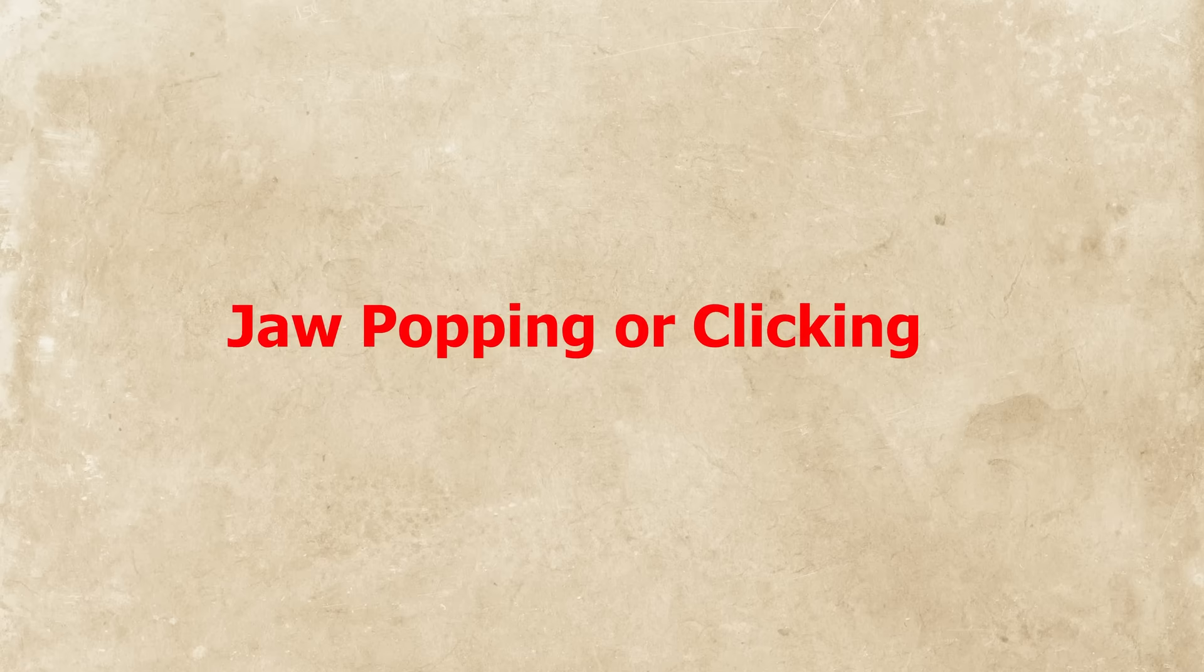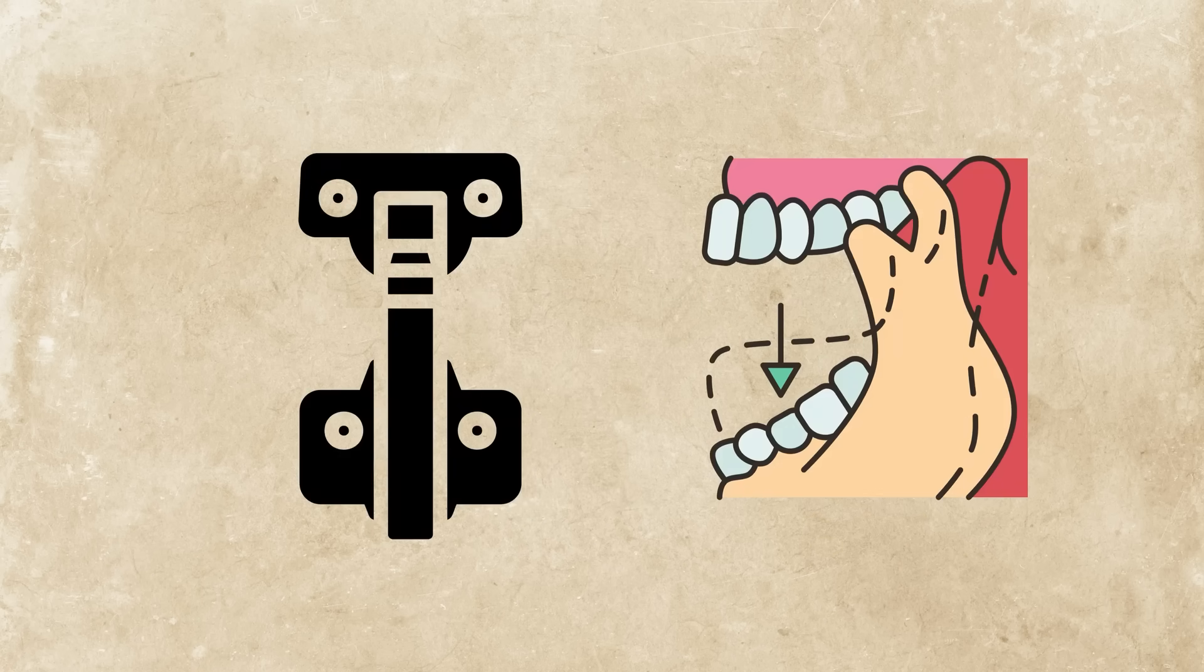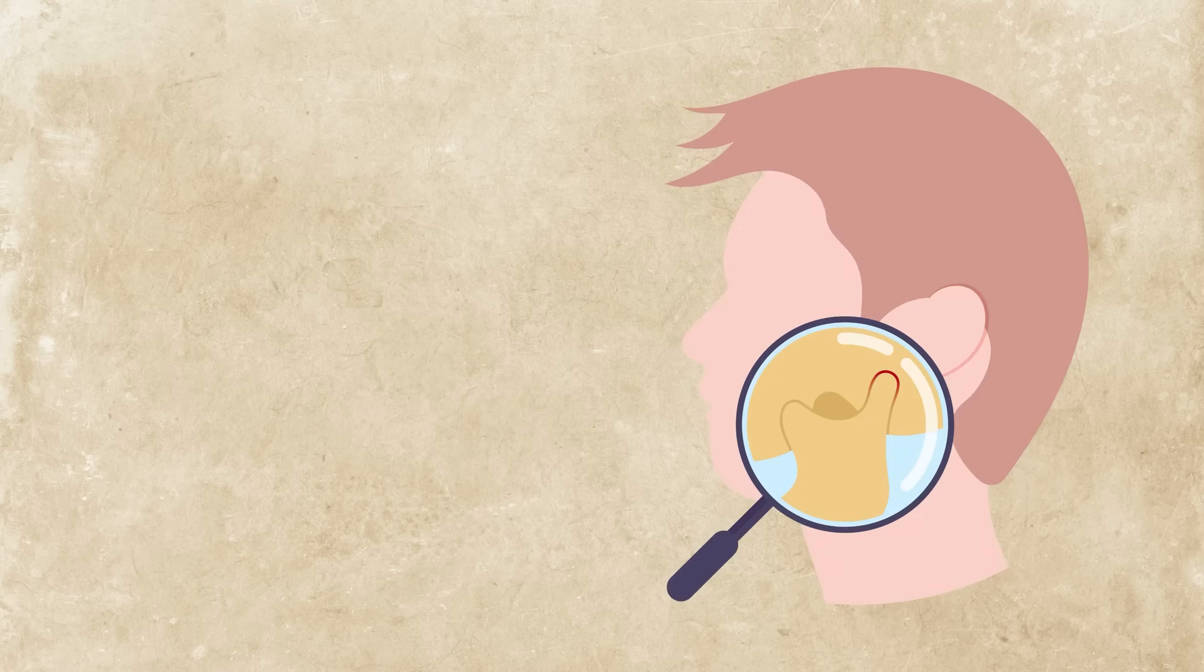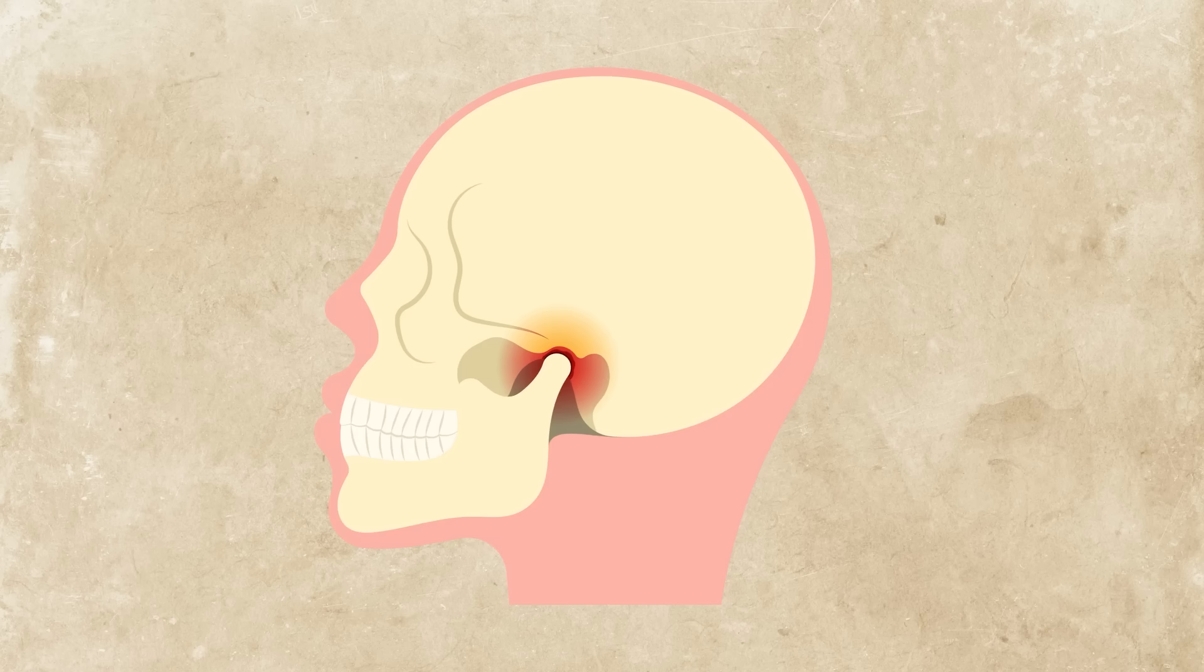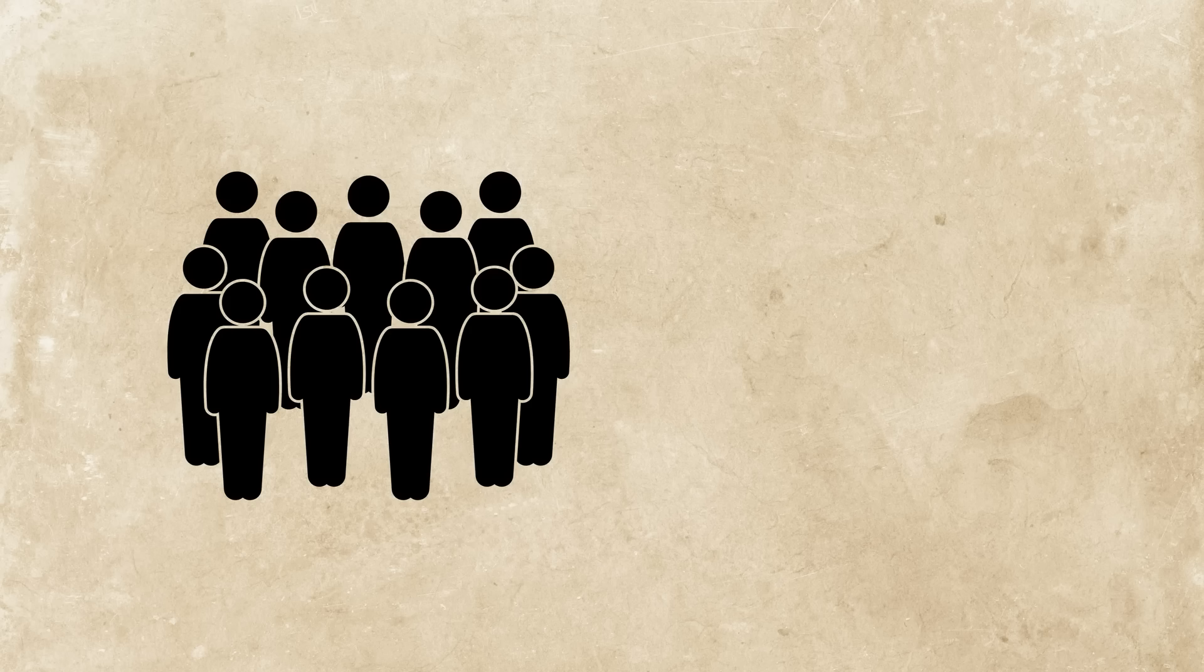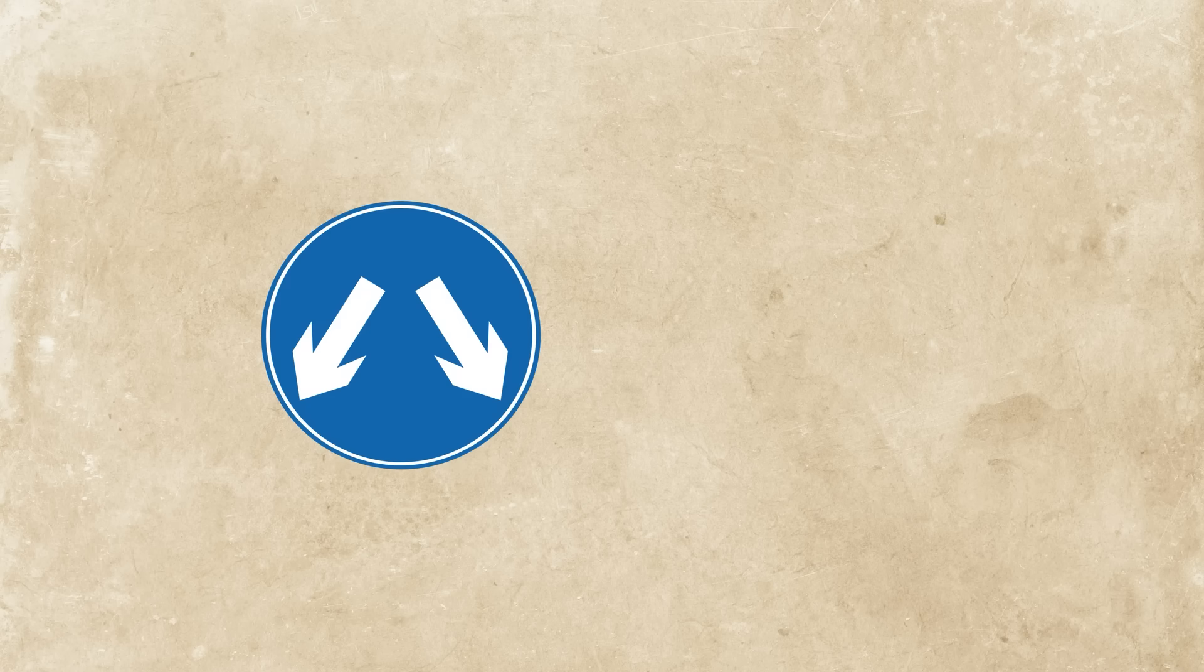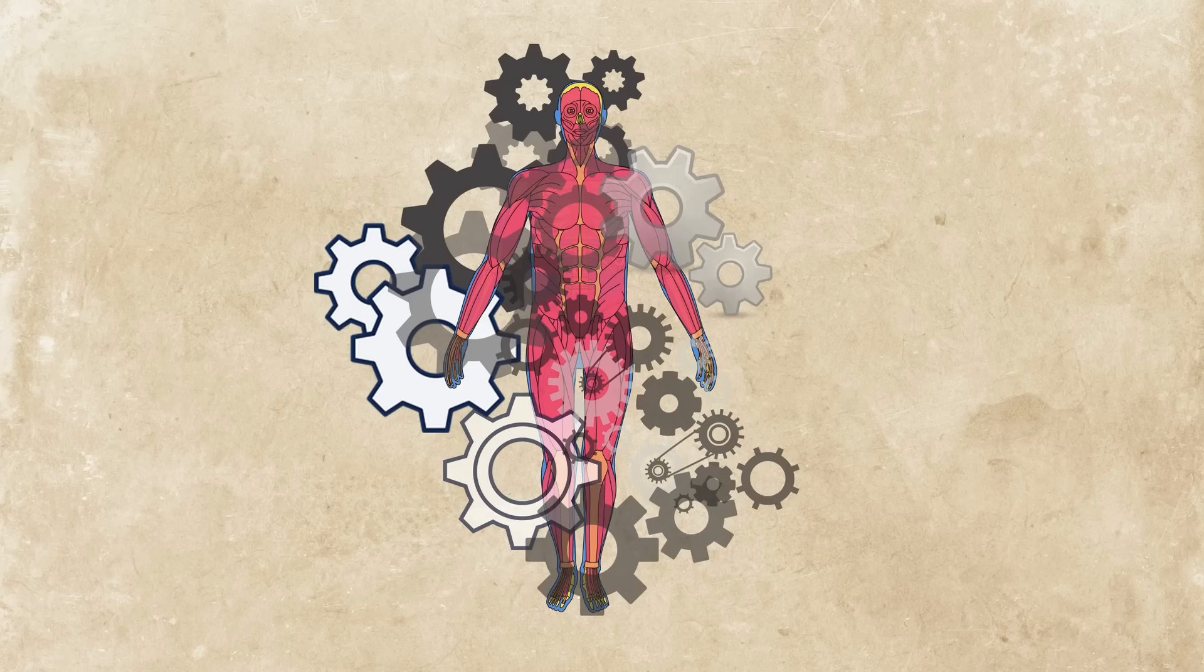Jaw popping or clicking. You open wide and click. Your jaw snaps like a loose hinge. This is often a quirk of the temporomandibular joint, or TMJ, which connects your jaw to your skull. If the disc inside shifts or the joint gets inflamed, you get that familiar popping sound. For some, it's harmless. For others, it causes pain. Either way, it's a mechanical issue, like your body's hardware slipping a gear.